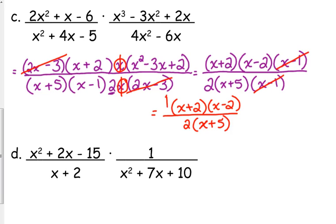So, our simplified form is x plus 2 times x minus 2 over 2 times x plus 5. And yes, you can multiply that out. That would be x squared minus 4 over 2x plus 10. Those are equivalent expressions.